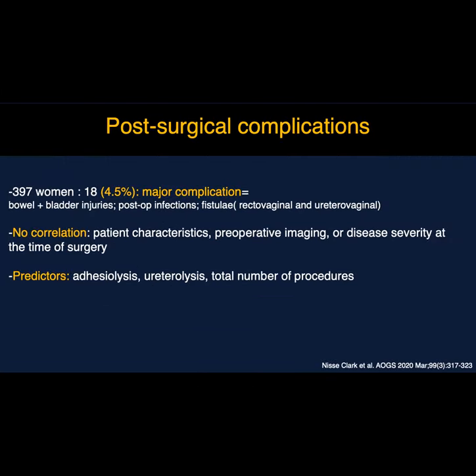Moving on to post-surgical complications. A 2020 paper from Boston looked at 397 women who underwent surgery for endometriosis — all three phenotypes. About 4.5% had major complications, including bowel and bladder injuries at surgery, post-op infections, or development of fistulizing disease such as rectovaginal or utero-vaginal fistulae. No preoperative imaging or disease severity could predict which patient would develop a major complication. Some correlation was seen with the extent of adhesiolysis, whether urethrolysis was performed, and the overall total number of procedures.